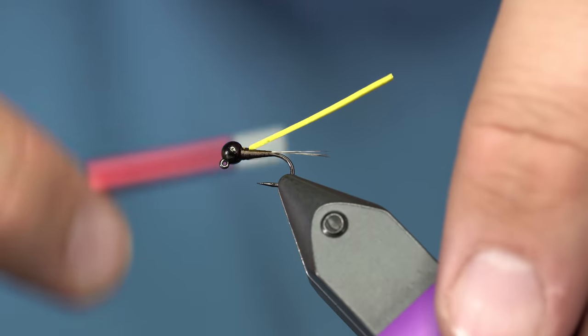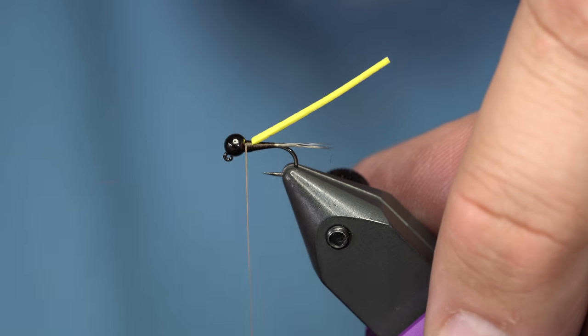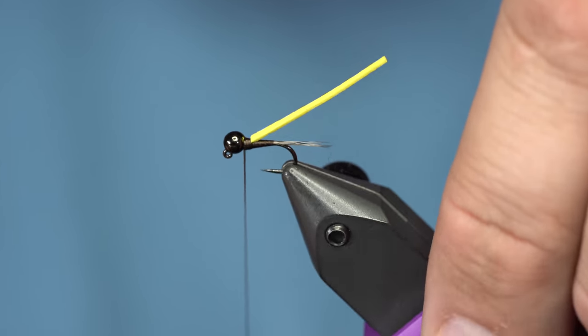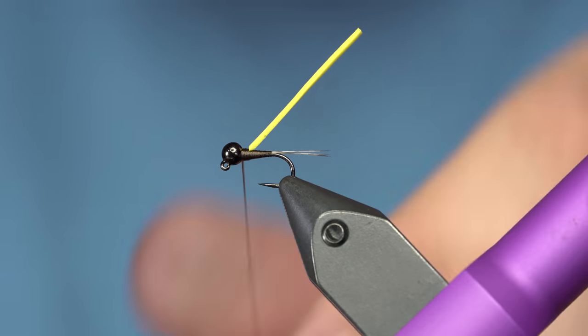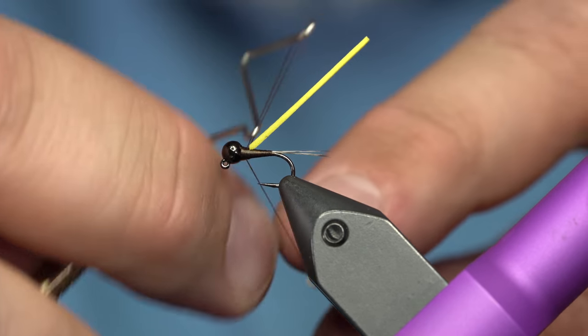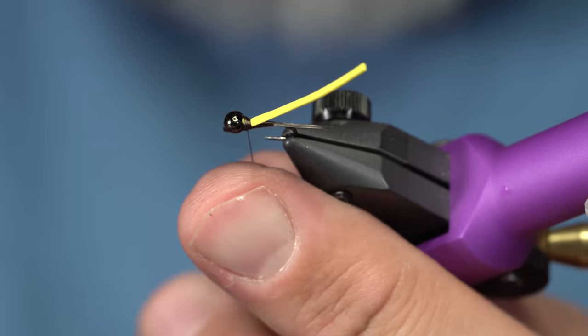So what I'm going to do is I'm going to tie this foam just like this. And no, it's not just going to be like a normal wing case. Check this out. So I've got my yellow tied in.